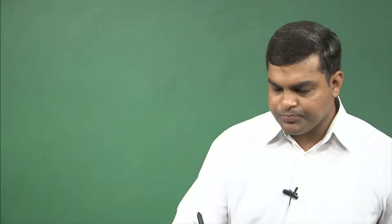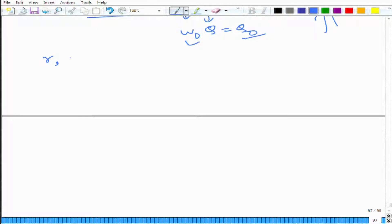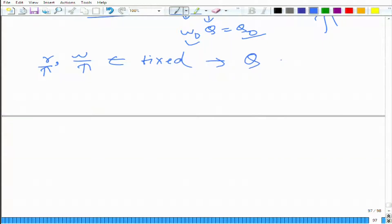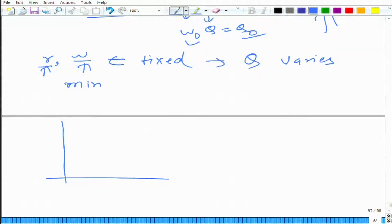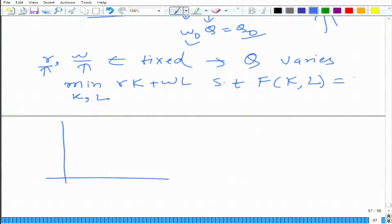What we are going to do is keep R and W fixed — R is rental and W is wage rate — and we are going to vary Q. What happens to the problem? Let us look at it graphically. We are trying to minimize R·k plus W·l with respect to k and l such that f(k, l) equals Q, and we are changing this Q.